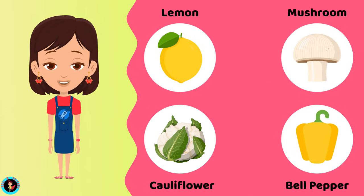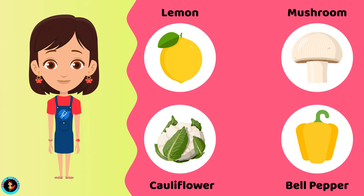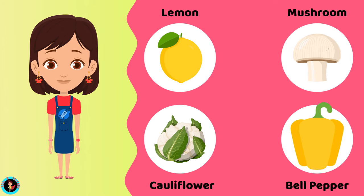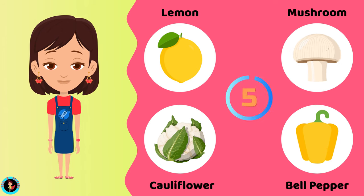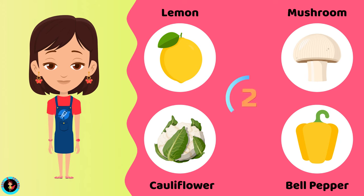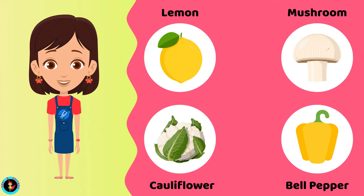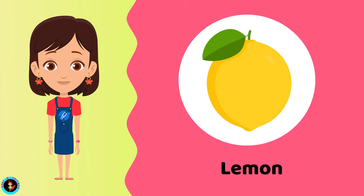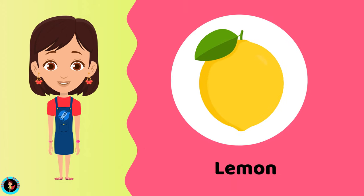Which among these is a fruit? Lemon. Mushroom. Cauliflower. Bell pepper. The right answer is Lemon. Lemon is a fruit.